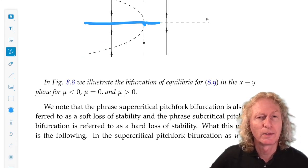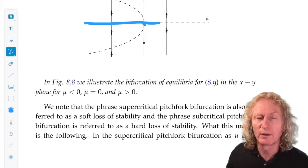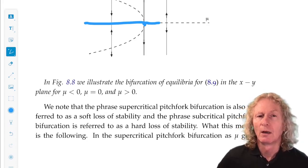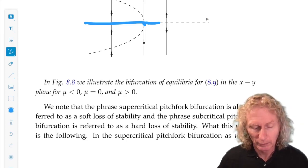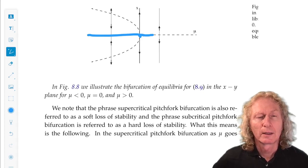And that's the pitchfork bifurcation, the two variants, the sub and supercritical, hard and soft loss of stability. That completes our examples in chapter eight.